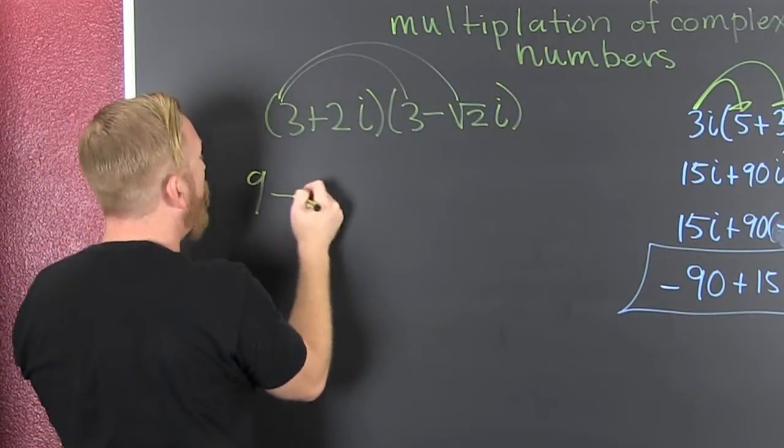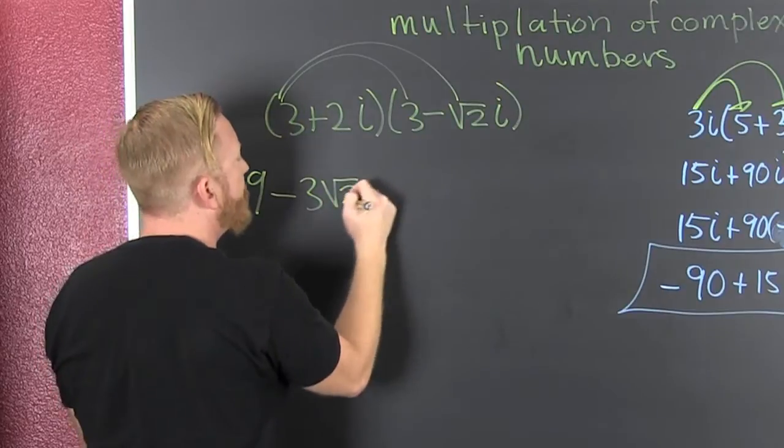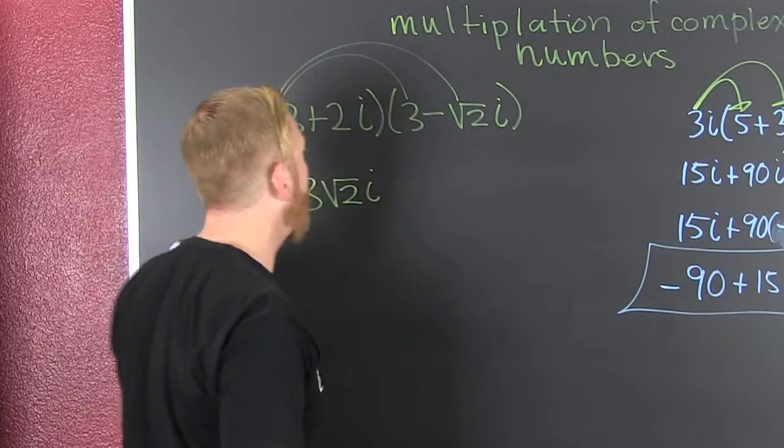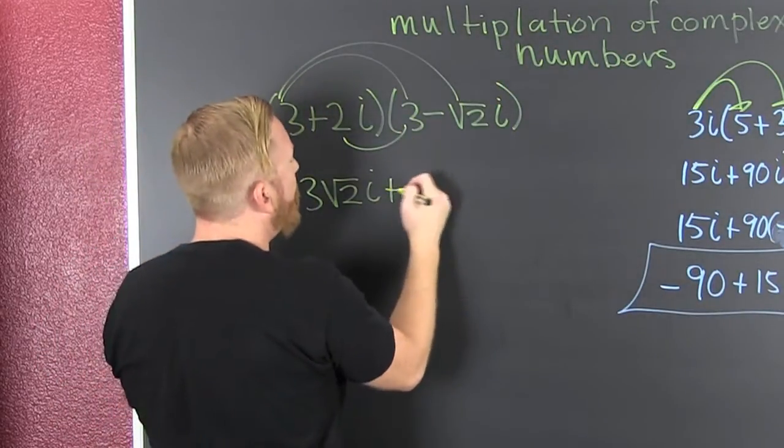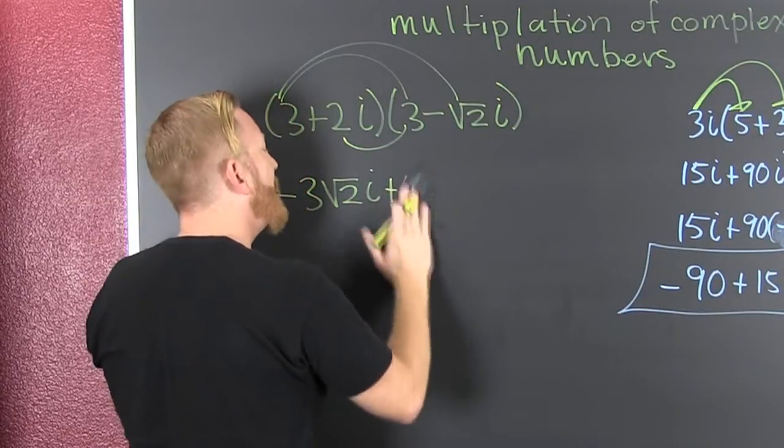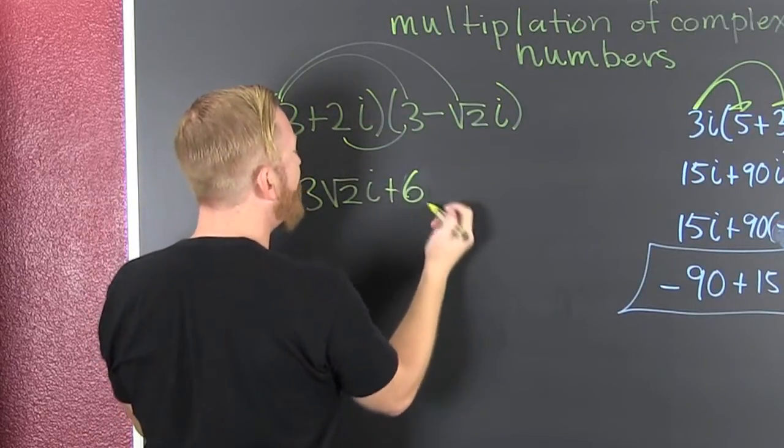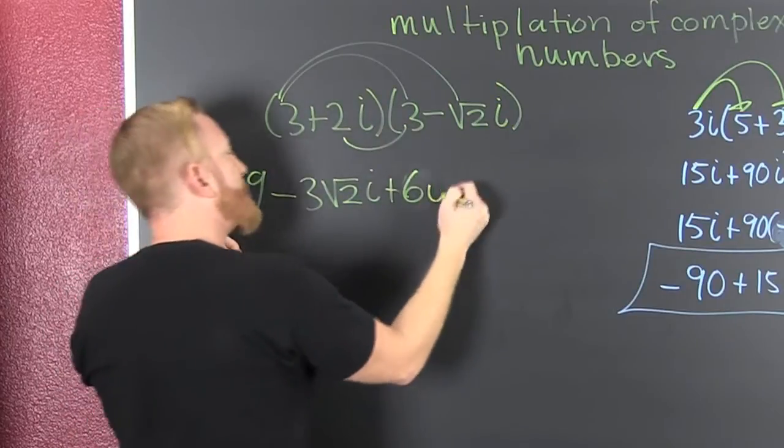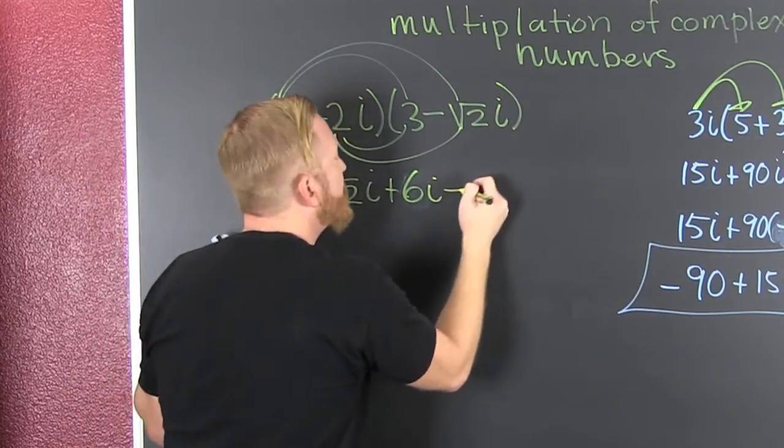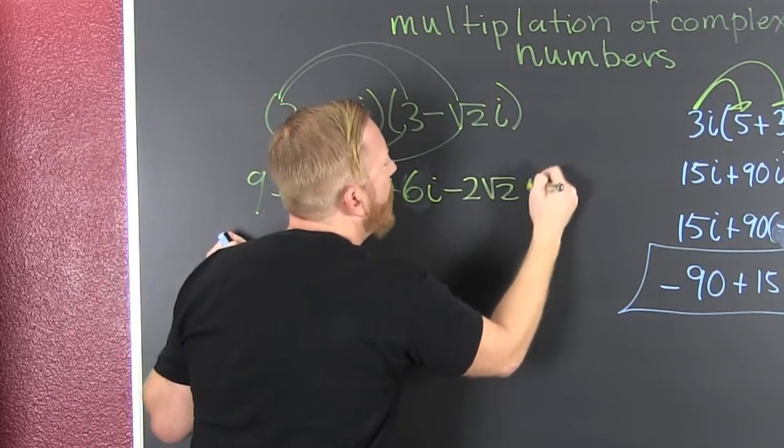And then I go outer. That's minus three root two i. Inner. Boom. Plus nine. Nope. Flip it, reverse it, back that math up. Two times three is six i. Then I say that's minus two root two i squared.